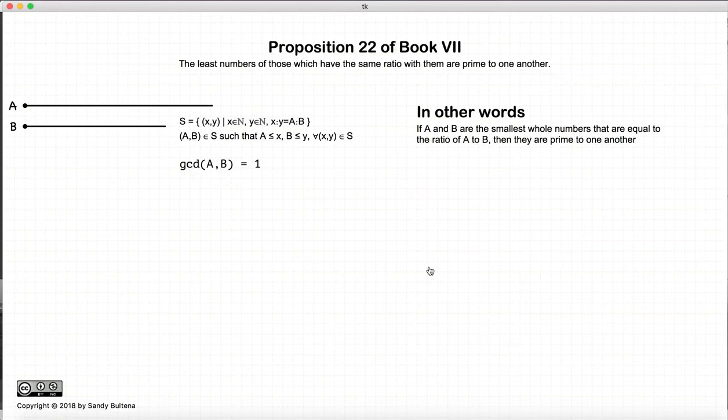Now in this proposition we have two numbers, A and B, where A and B are the smallest two numbers that can be used to form the ratio of A to B. It states that if that is true, then the greatest common divisor of A and B is equal to 1, or in other words, A and B are relatively prime.